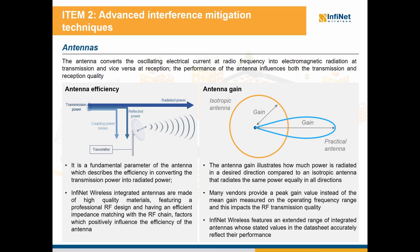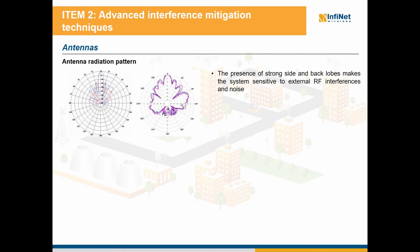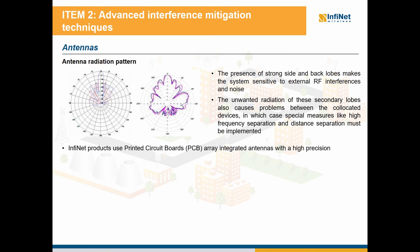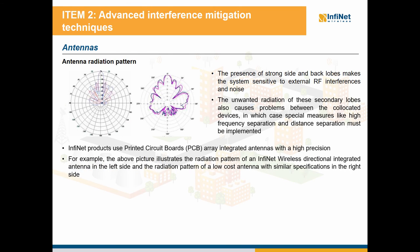Infinite Wireless features an extended range of integrated antennas whose stated values in the datasheet accurately reflect their performance. The radiation pattern offers an easy visualization of the radiated energy into space. The presence of strong side and back lobes makes the system sensitive to external RF interferences and noise. The unwanted radiation of these secondary lobes also causes problems between collocated devices, in which case special measures like high frequency separation and distance separation must be implemented. Infinite products use printed circuit board array integrated antennas with high precision.